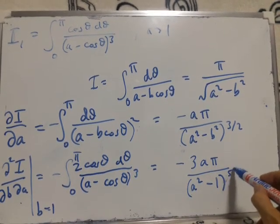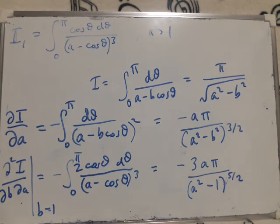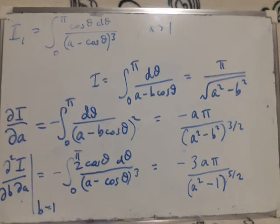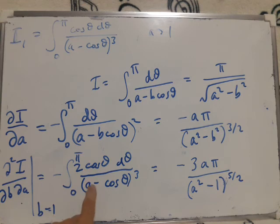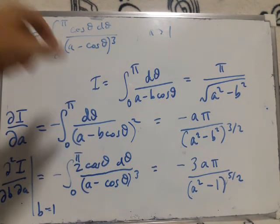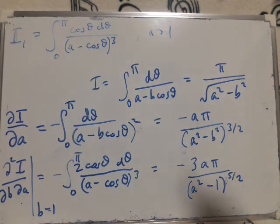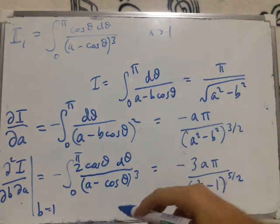I end up with the three upstairs and (a² - 1) to the five halves now downstairs. So then almost there, all I need to do now is divide both sides by minus two.